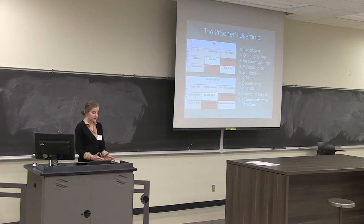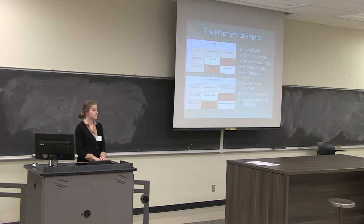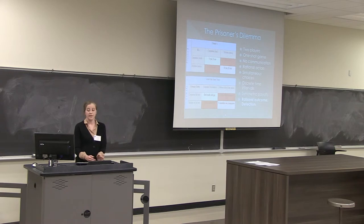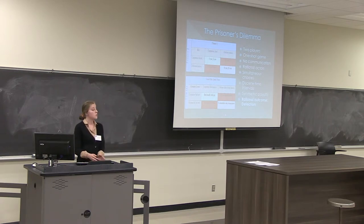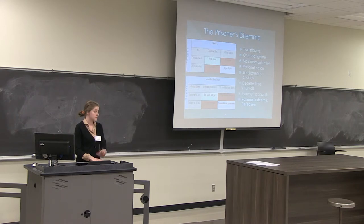The story goes as follows: two prisoners are caught for their crime and put in separate rooms. They can either confess — meaning defect on the other prisoner — or cooperate by keeping silent. If both cooperate and keep silent, they each get a five-year sentence. However, if one defects by confessing while the other cooperates and keeps silent, the one who confessed goes free while the other gets a full 20-year sentence. If both confess, they each get a ten-year sentence.